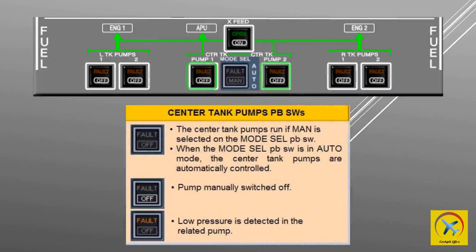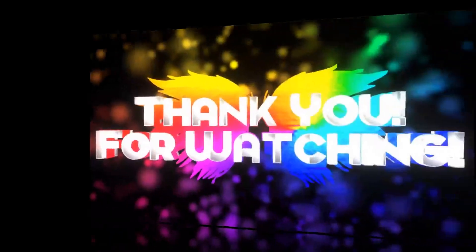The center tank pumps run if manual is selected on the mode selector push button switch. When the mode selector push button switch is in auto mode, the center tank pumps are automatically controlled. OFF white legends appear if the pump is manually switched off. Fault lights illuminate when low pressure is detected in the related pump.